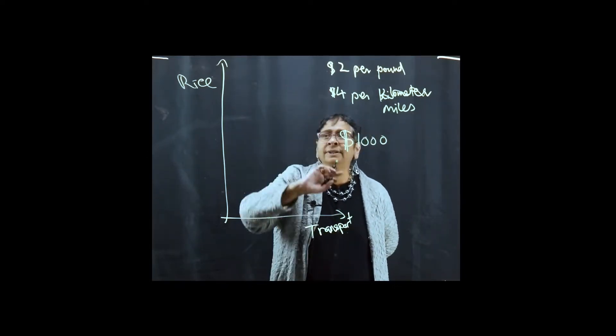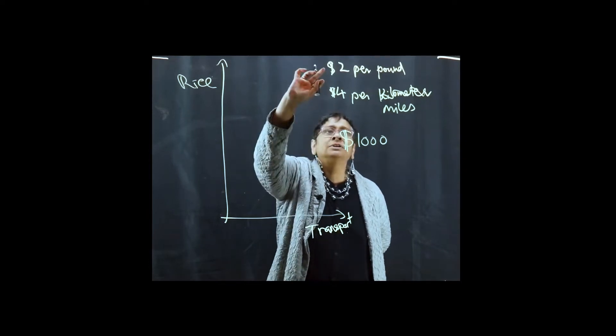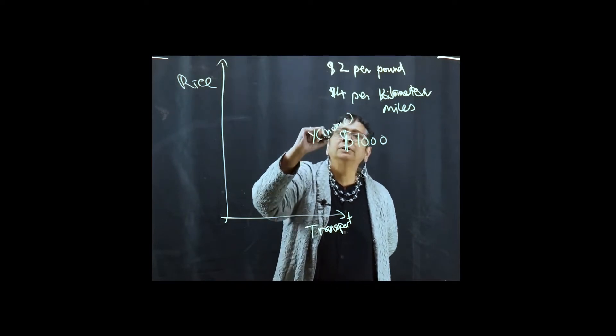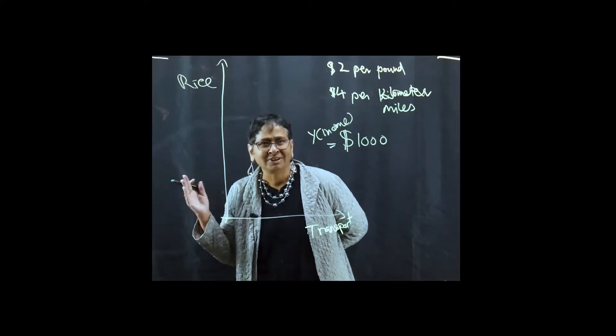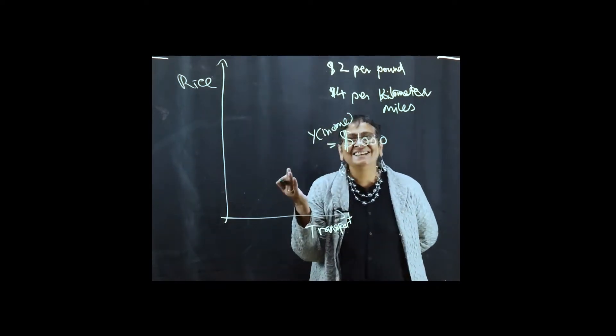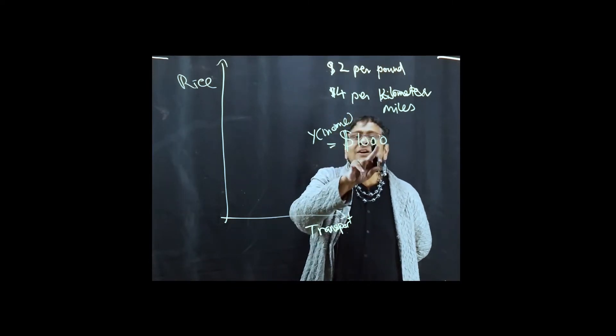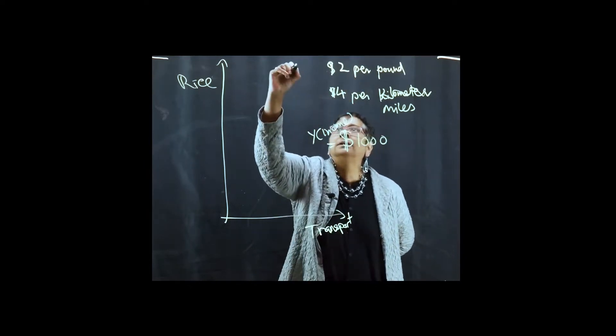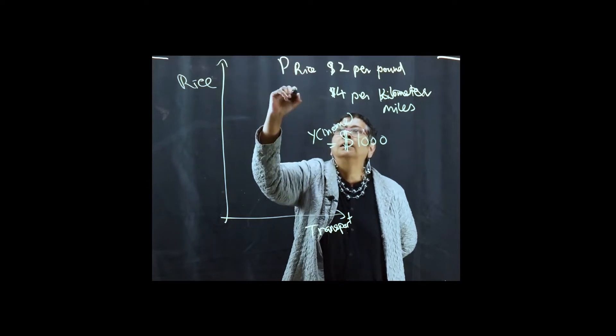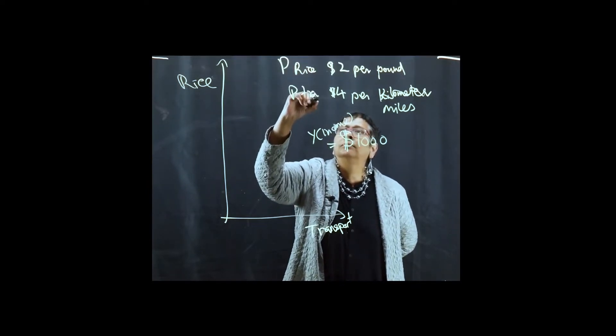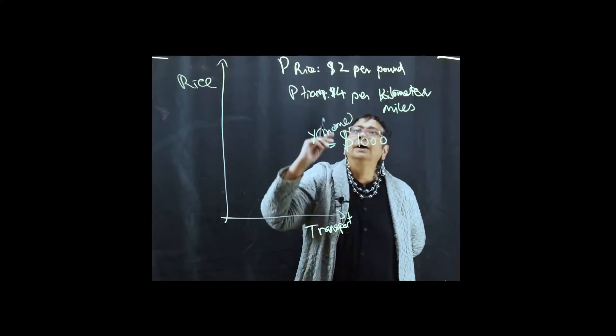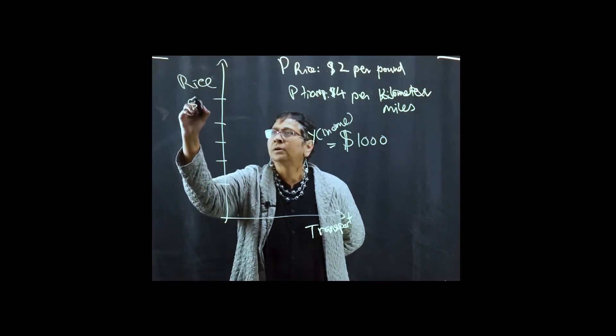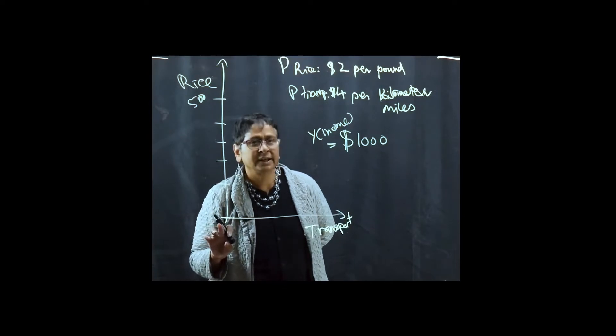So if you look at this, if you took your $1,000, I'm going to use Y for income, because in macro I ended up using I for investment, so I need a different symbol. So if I'm earning $1,000, the maximum rice I can get at $2 per pound is 500 pounds, but that means I can't get any transport.